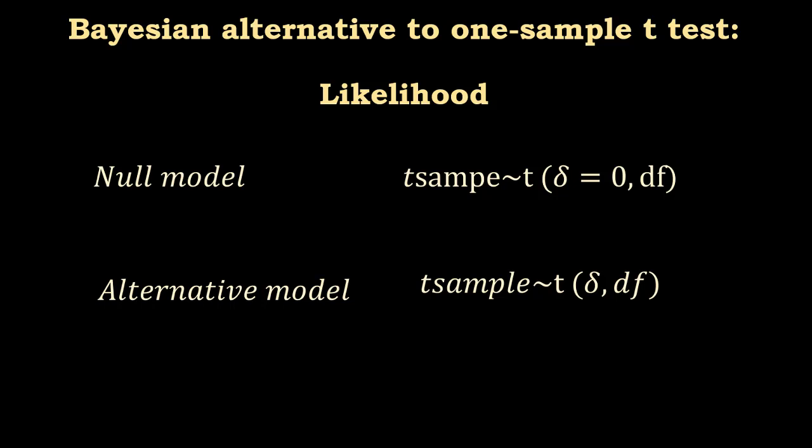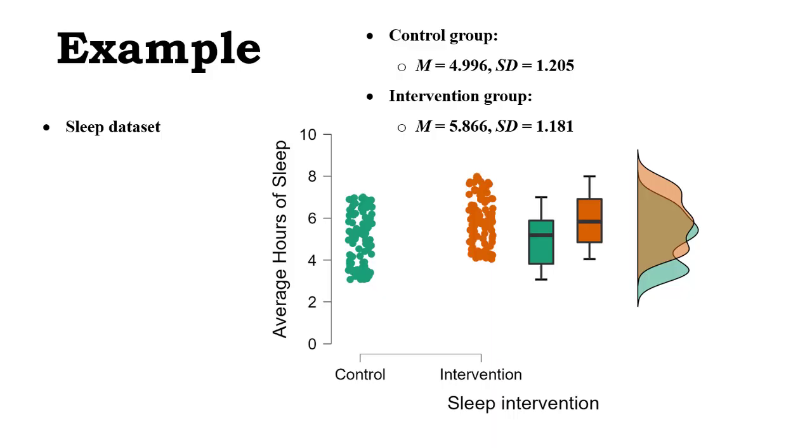The likelihood in the null model is a t-distribution, like in the previous case. The difference is that now delta is fixed to zero rather than any specified value, and the degrees of freedom we already talked about. For the alternative model is the same as in the one sample t-test, the distribution with all the values of delta that we allowed in the prior of the model.